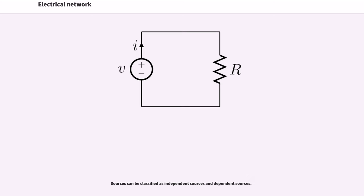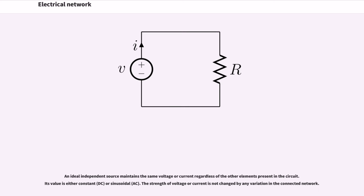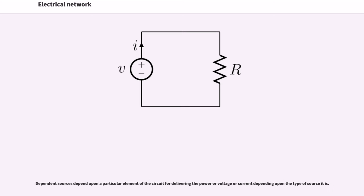Sources can be classified as independent sources and dependent sources. An ideal independent source maintains the same voltage or current regardless of the other elements present in the circuit. Its value is either constant or sinusoidal. The strength of voltage or current is not changed by any variation in the connected network. Dependent sources depend upon a particular element of the circuit for delivering the power or voltage or current depending upon the type of source it is.